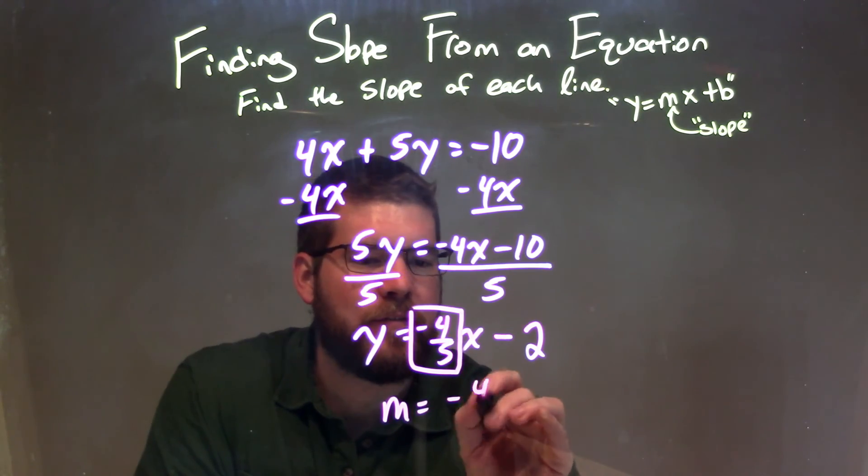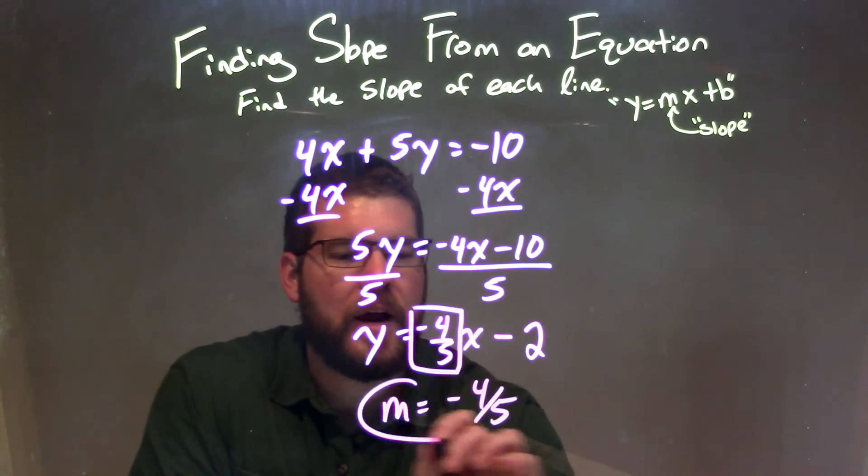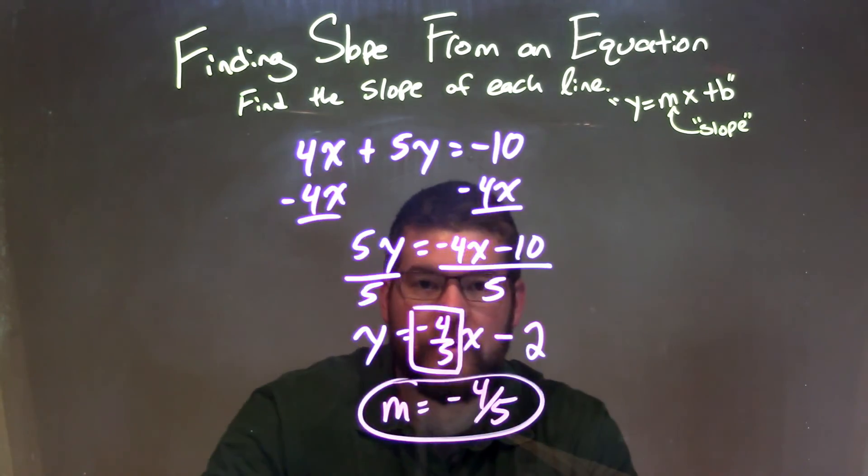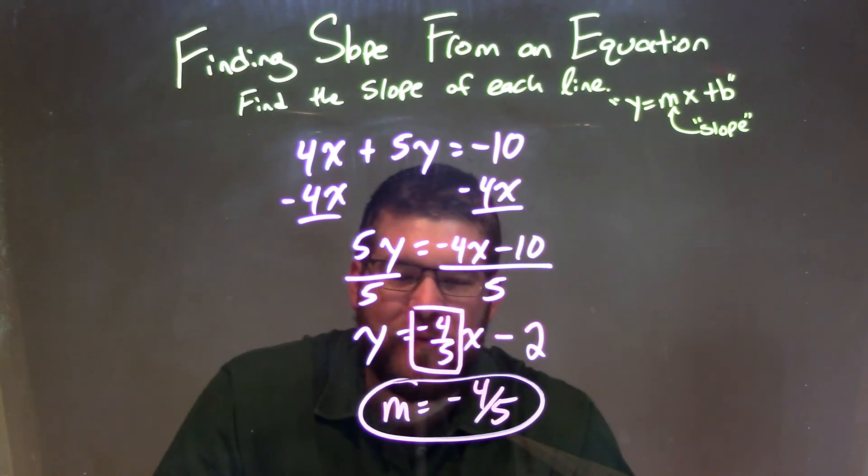So my m is equal to negative 4 fifths, and there we have our final answer, our final slope of negative 4 fifths.